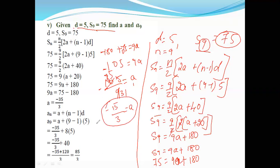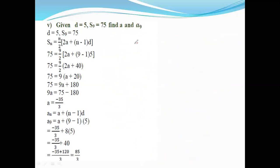So the a value is minus 15 by 3, and the first term is minus 15 by 3. Now we have to find out a₉. The formula is aₙ is equal to a plus (n minus 1) into d.